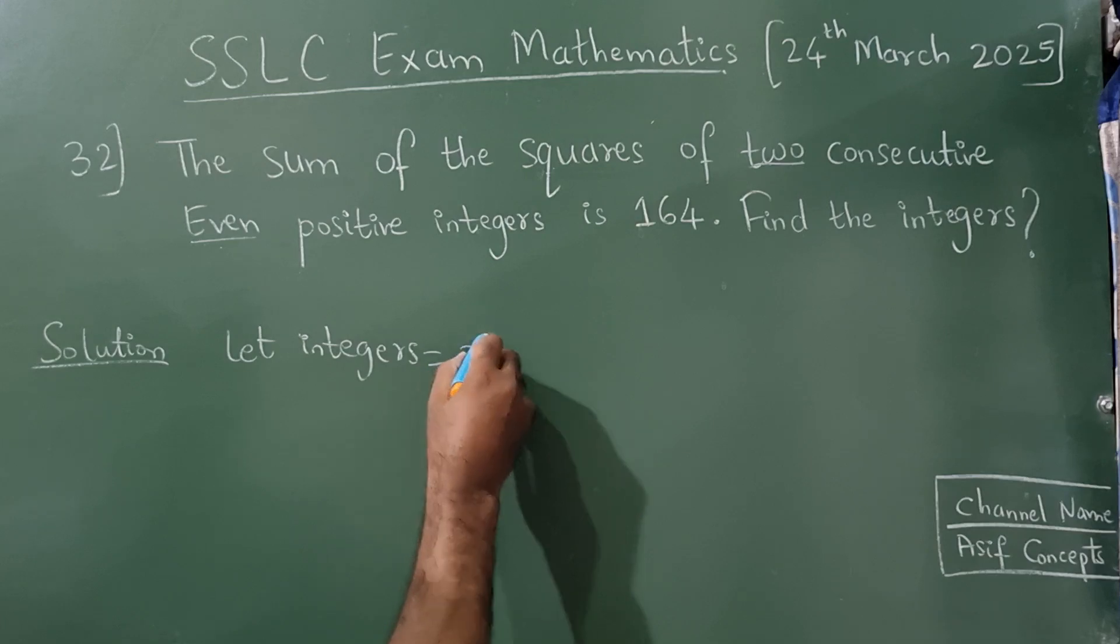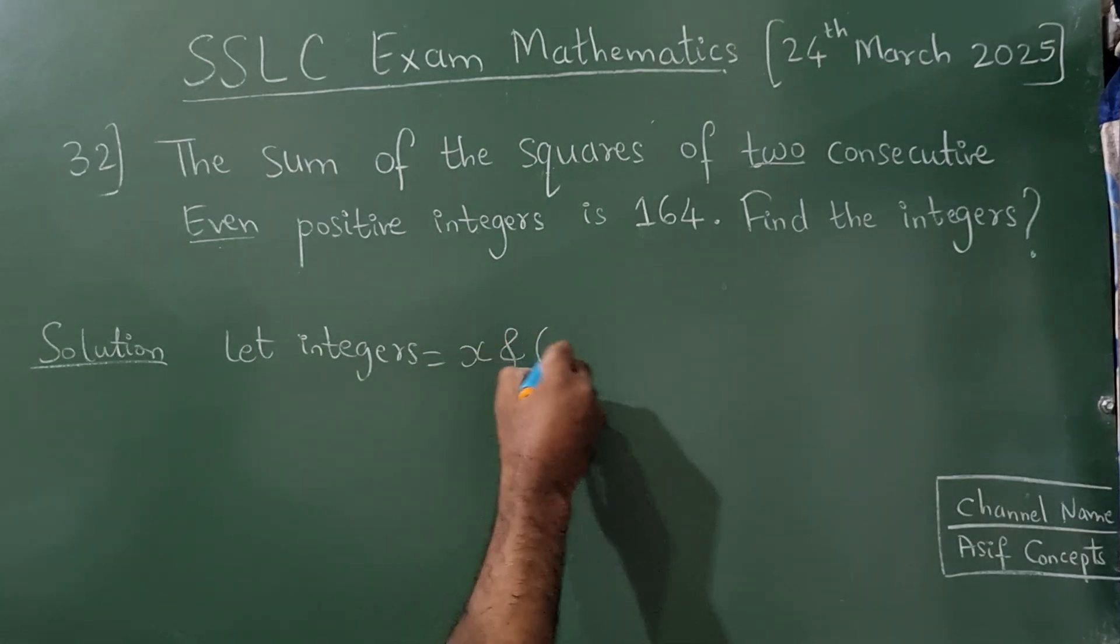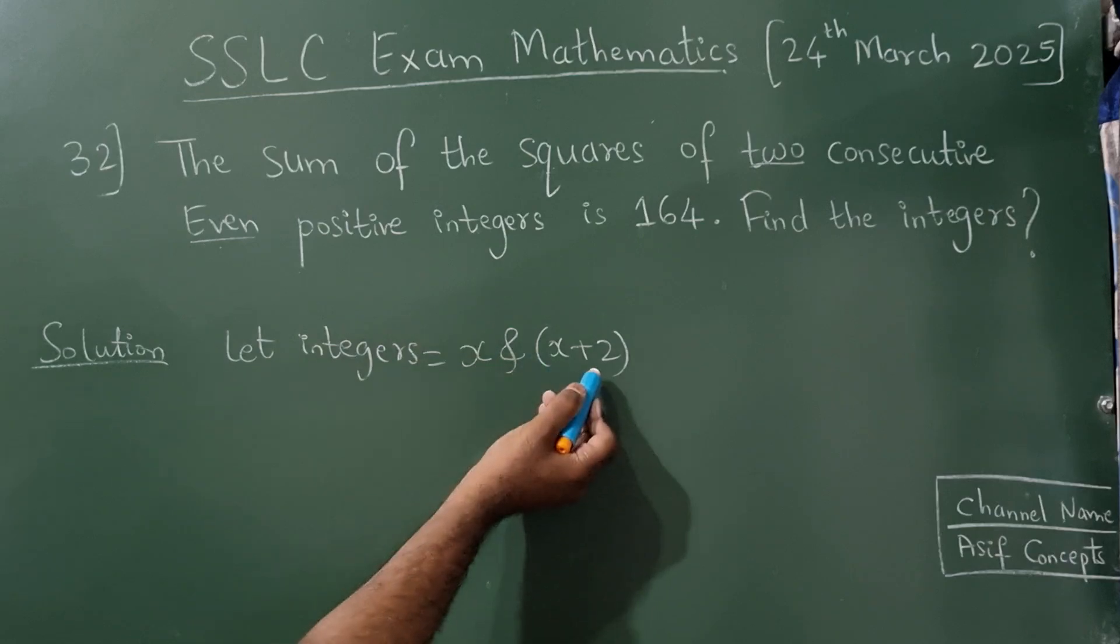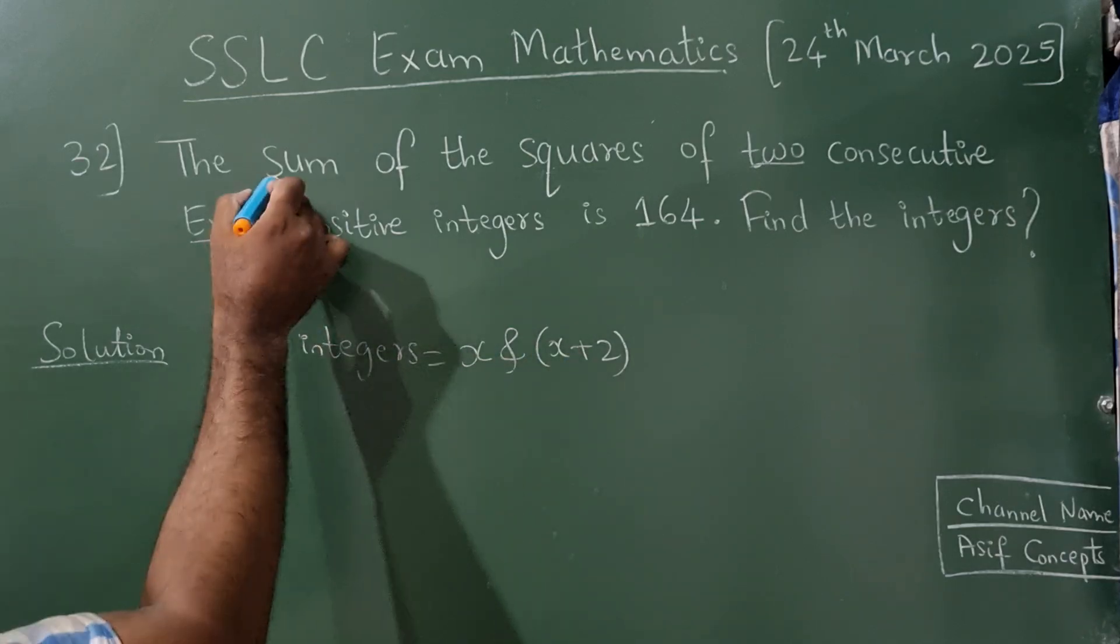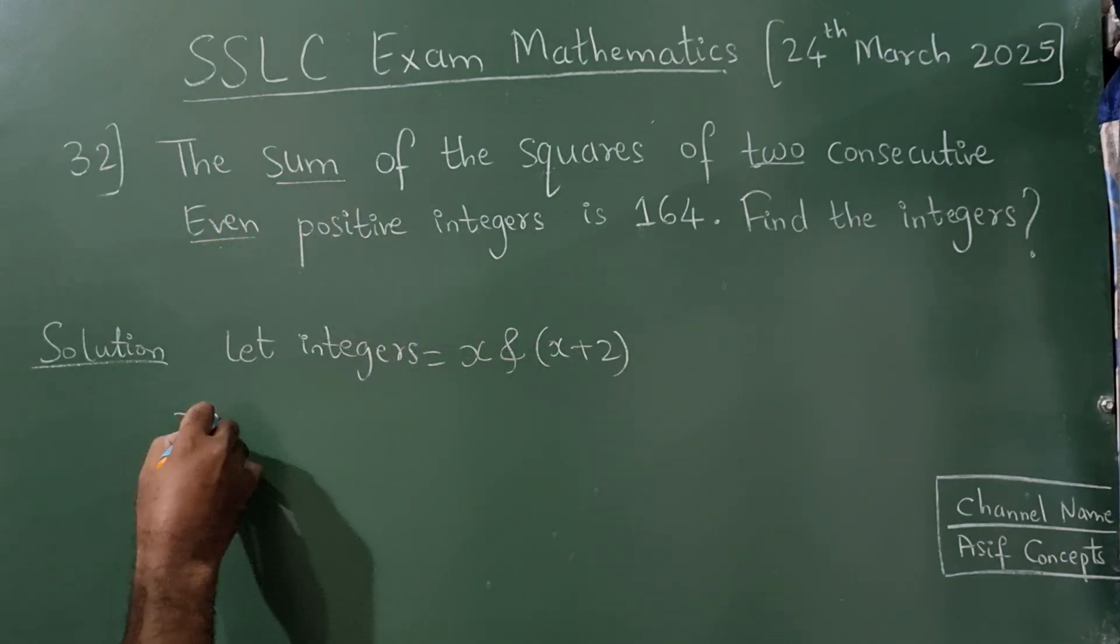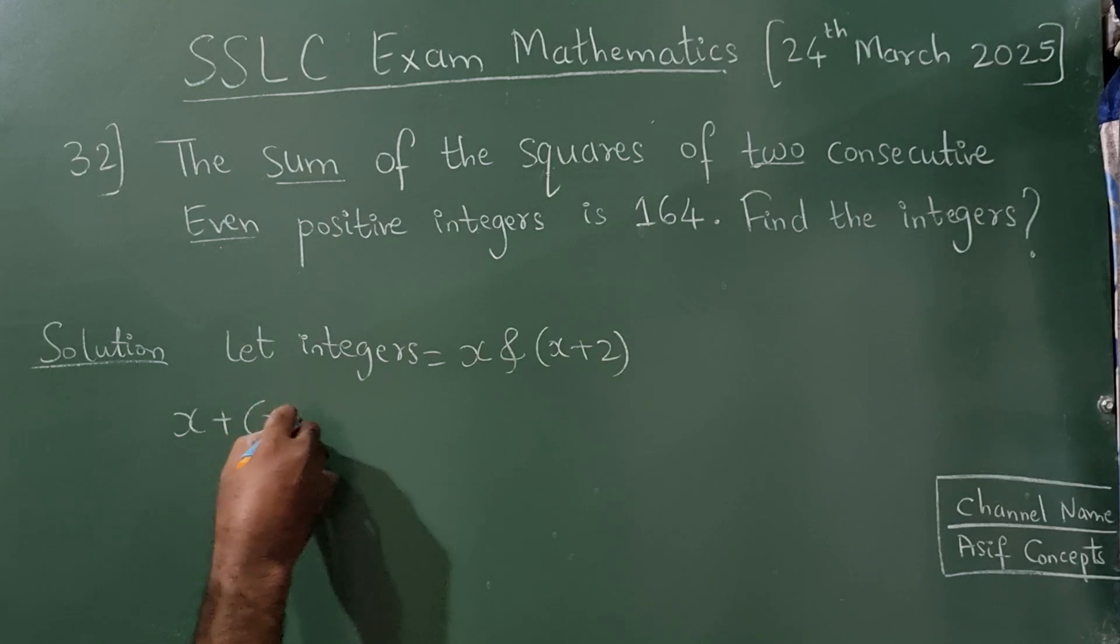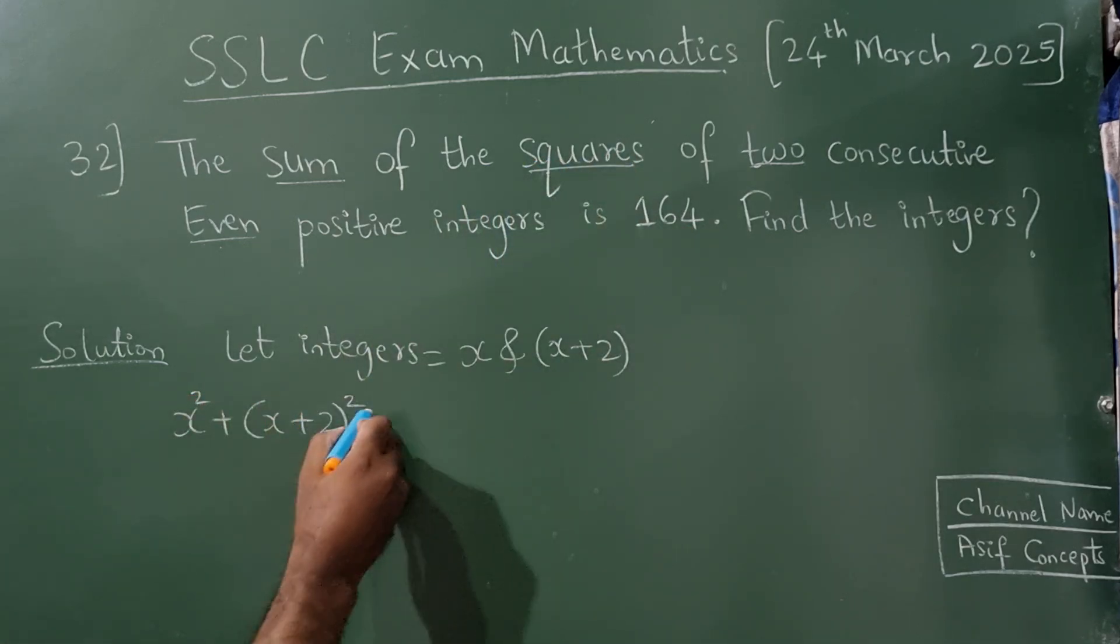Let the two integers be x and x plus 2. Why? Because it is even, so I have written x plus 2. Now, sum. So I'm going to write x plus x plus 2, but what is here? Squares. So it is square, then it is 164.